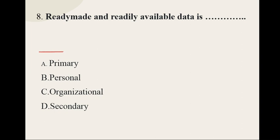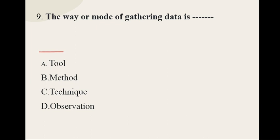Question number eight: Ready-made and readily available data is dash — options are primary, personal, organizational, and secondary — and the correct option is secondary data.